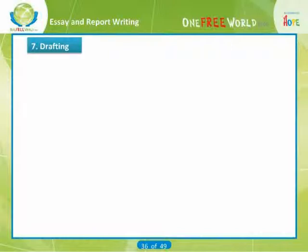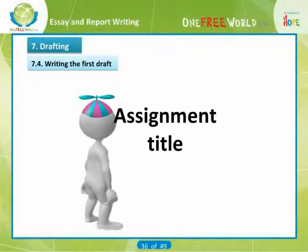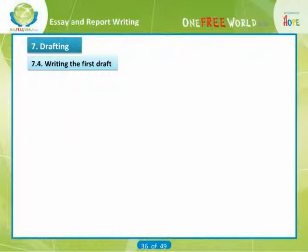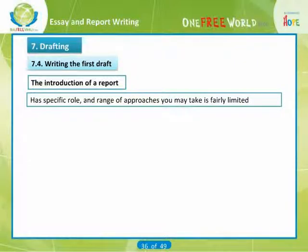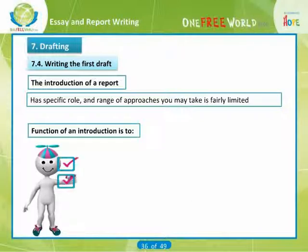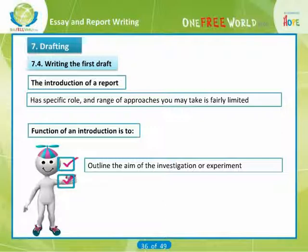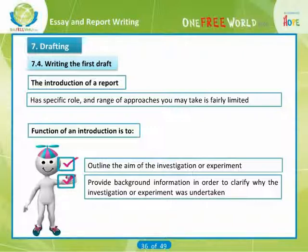Now that you are beginning to draft, keep the assignment title in front of you and refer back to it regularly. Are you doing what you are asked to do, or are you writing about what you want to write about? The introduction of a report has a very specific role with a fairly limited range of approaches. Its function is to outline the aim of the investigation or experiment, list the objectives, and provide background information to clarify why the investigation or experiment was undertaken.